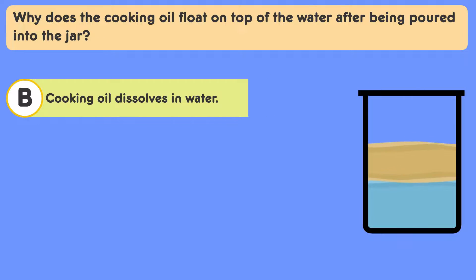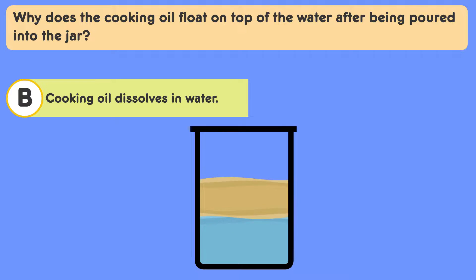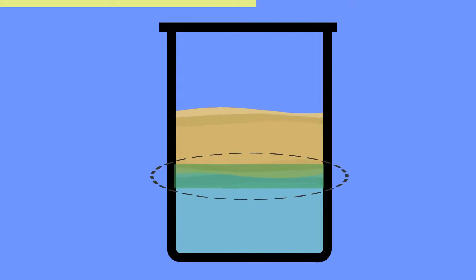B. Cooking oil dissolves in water. However, let's investigate this as well. Examine whether oil and water mix or separate. Now let's analyze. Discuss what the separation or lack thereof indicates about their densities.